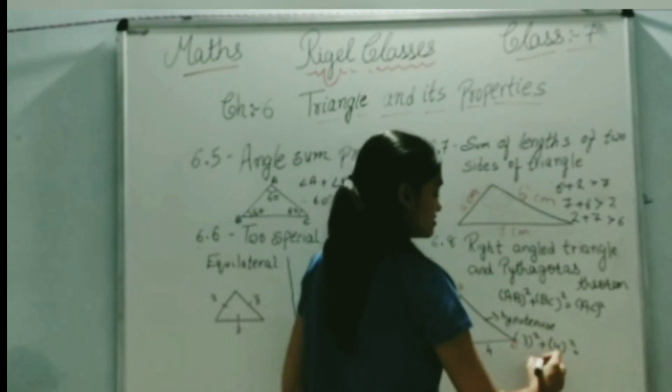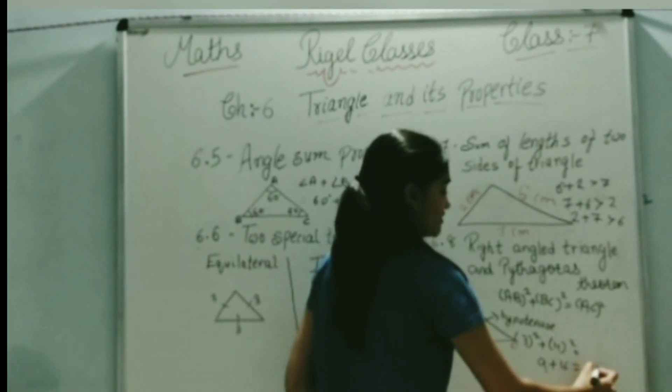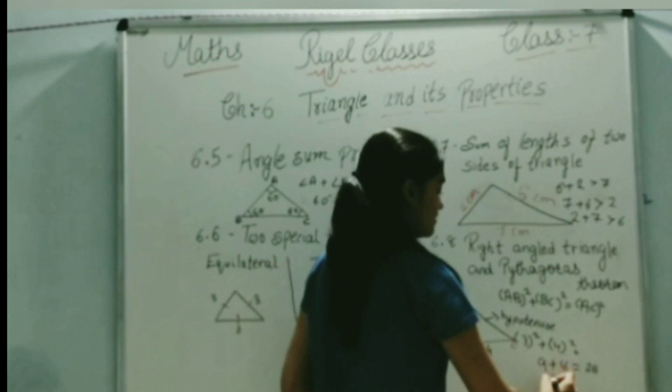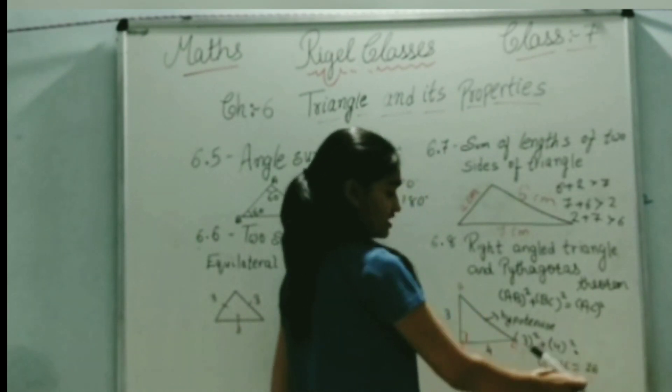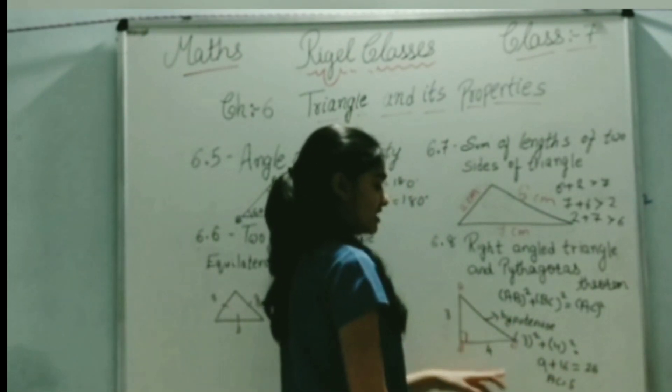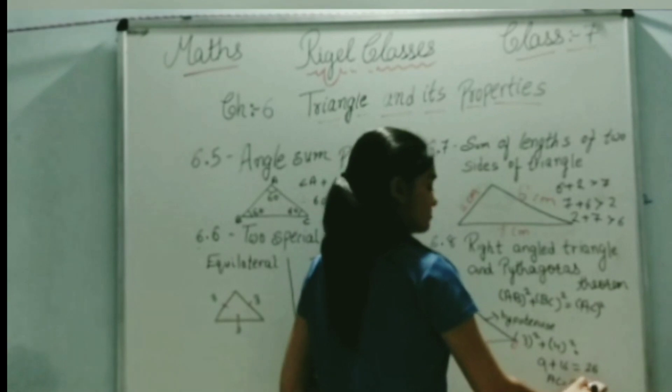So 3 squared is 9, plus 4 squared is 16, which equals 25. So AC will be equal to 5, that is, the square root of 25 is 5. So the length of AC is 5 cm.